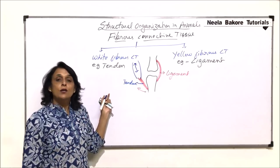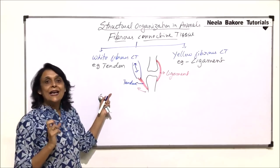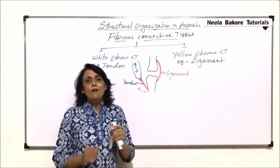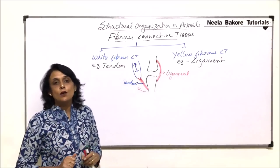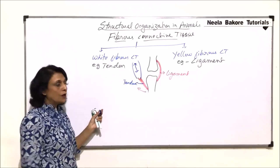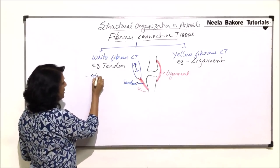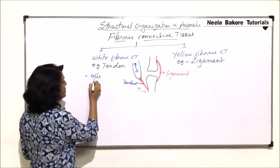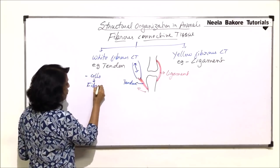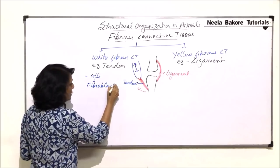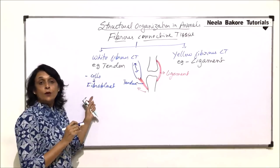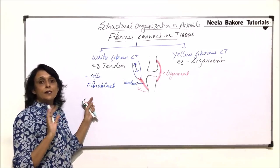Tendons have more collagen fibers. Collagen fibers provide high tensile strength, and elastin fibers provide flexibility and elasticity to the tissue. Now if we draw the structure, there would be cells, and the main cell is the fiber-secreting cell — that is, fibroblast. Maximum cells present are fibroblasts, and they secrete the collagen fiber; the main fiber here is collagen.